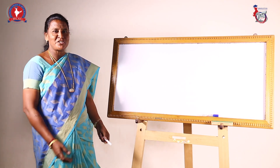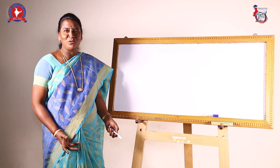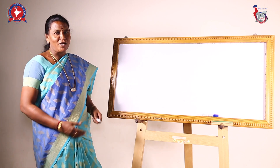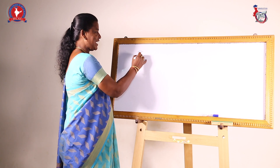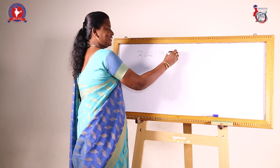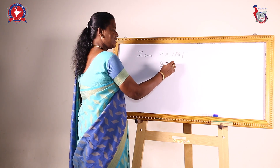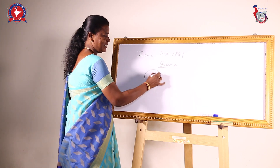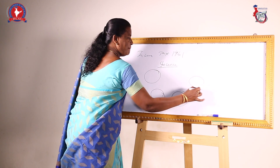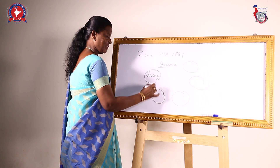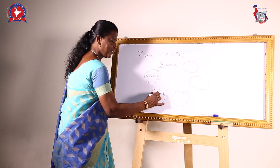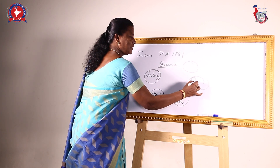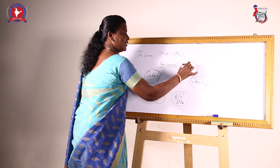Before going to income tax, we should know what is income. In ordinary terms, everybody knows that income means what we are getting from the employer. But according to the Income Tax Act 1961, income is considered under 5 heads: income from salary, income from house property, income from business and profession, income from capital gain, and income from other sources.